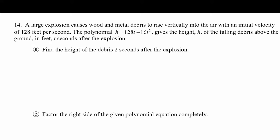We are continuing our work with solving word problems that involve polynomials by using factoring. In this case we have a large explosion that causes wood and metal debris to rise vertically into the air with an initial velocity of 128 feet per second. The polynomial h = 128t - 16t² gives the height h of the falling debris above the ground in feet, t seconds after the explosion.